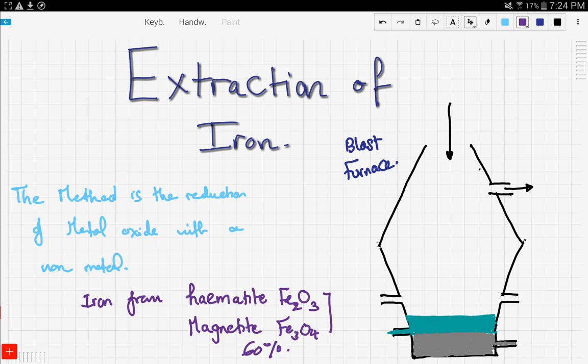In the blast furnace, coke is added plus limestone, which is calcium carbonate (CaCO₃), in addition to the iron ore.